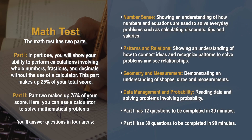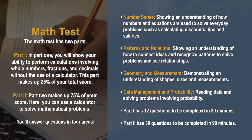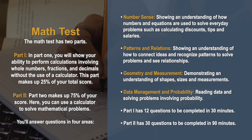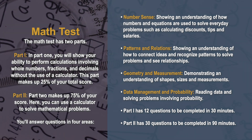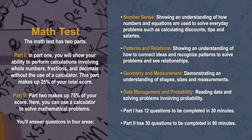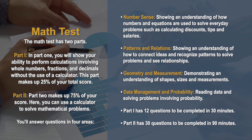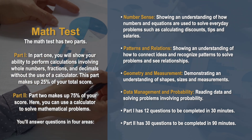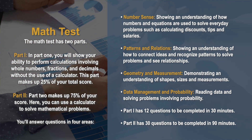The math test has two parts. In part one, you will show your ability to perform calculations involving whole numbers, fractions, and decimals without the use of a calculator. This part makes up 25% of your total score. Part two makes up 75% of your score, and here you can use a calculator to solve mathematical problems. You will answer questions in four areas: number sense — understanding how numbers and equations solve everyday problems such as calculating discounts, tips, and salaries; patterns and relations — connecting ideas and recognizing patterns; geometry and measurement — understanding shapes, sizes, and measurements; and data management and probability — reading data and solving problems involving probability. Part one has 12 questions completed in 30 minutes; part two has 30 questions completed in 90 minutes.